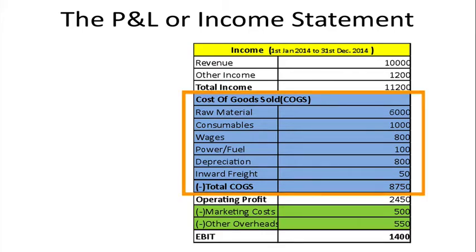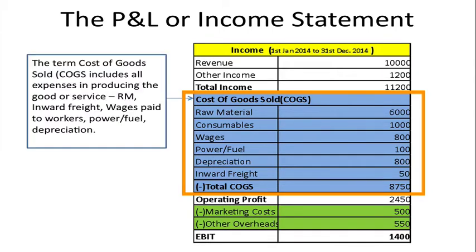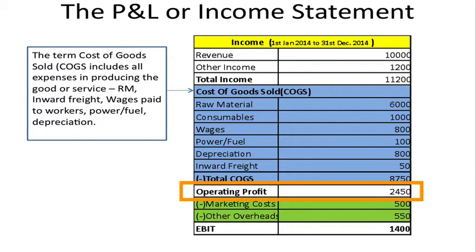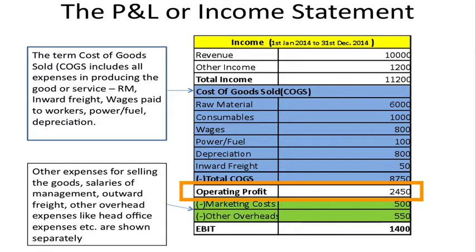The next group of figures are all clubbed under one common name: Cost of Goods Sold, or COGS. Cost of goods sold is the total expenditure the company has incurred in creating its product or service directly — this includes salaries and wages, electricity, water, power, fuel, and depreciation. If you subtract the cost of goods sold from the total income, you get a profit figure known as the operating profit, because it is not the final profit — it is only the profit at the factory gate.